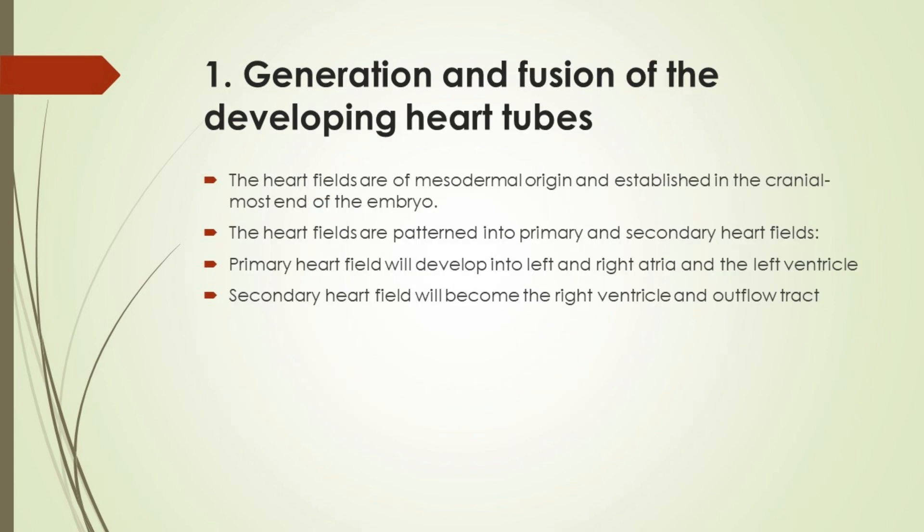Generation and fusion of the developing heart tubes: The heart fields are of mesodermal origin and established at the cranial-most end of the embryo. The heart fields are patterned into primary and secondary heart fields. The primary heart field will develop into the left and right atria and the left ventricle. The secondary heart field will become the right ventricle and outflow tract.